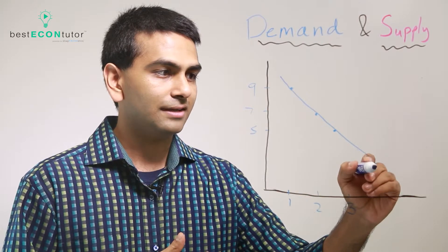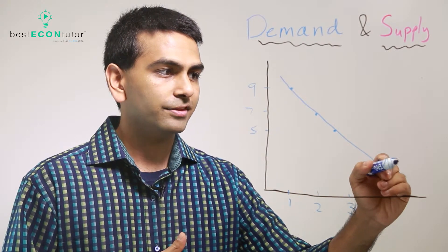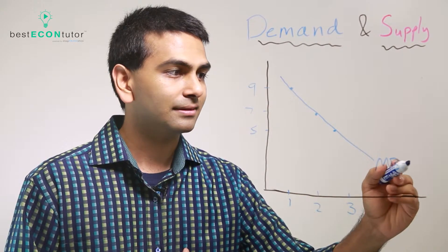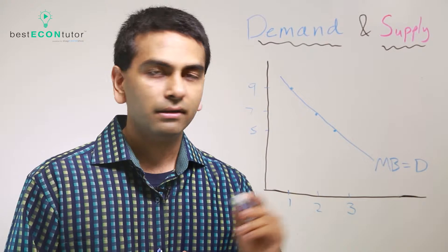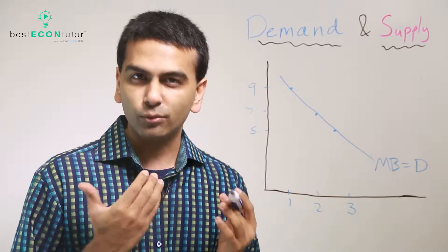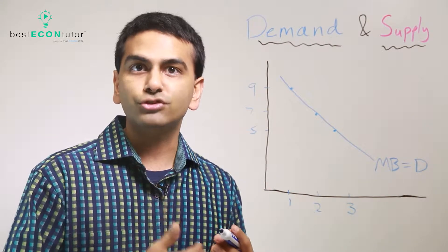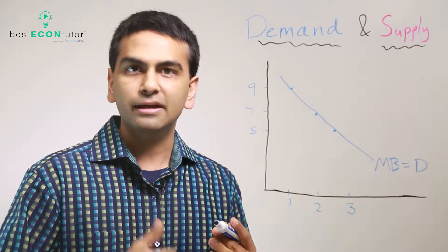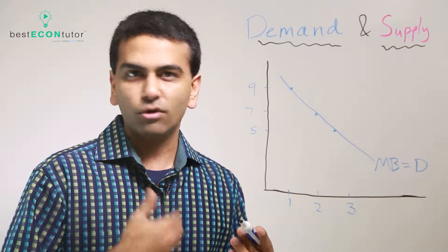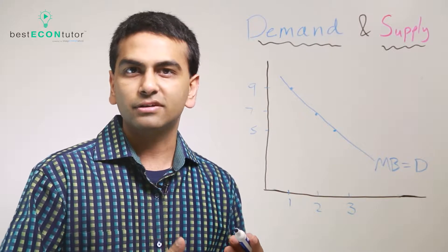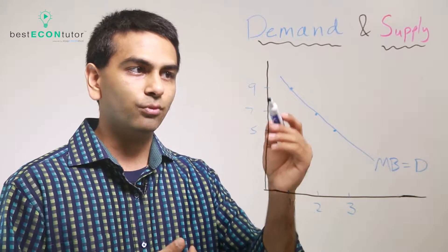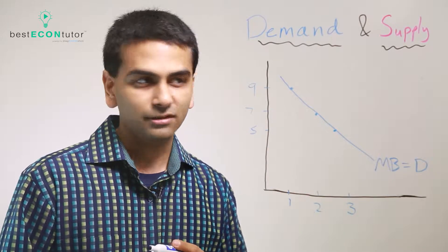Our marginal benefit curve has a downward slope. Now this marginal benefit curve has another name, more popularly known as demand. So what the demand curve really is, is that it's the marginal benefit curve — the benefit you get from each extra item. It usually always goes down. The more of any good you have, the less you're going to value the next one, and that's why the demand curve is downward sloping.